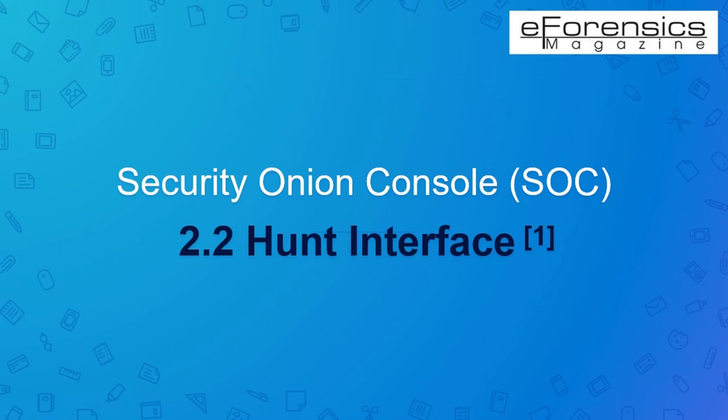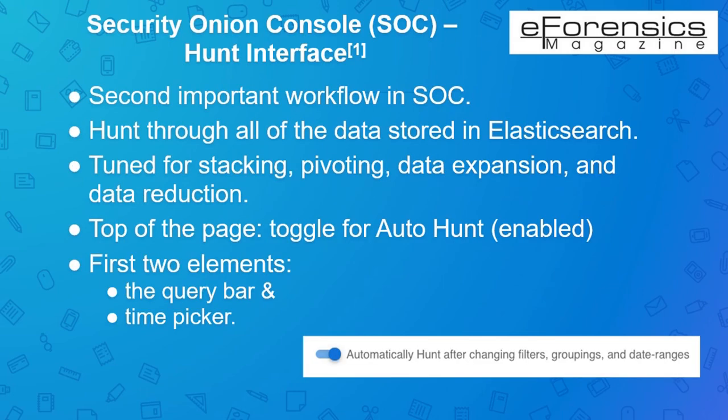The new Hunt interface is the next workflow option on the Security Onion Console. After logging in, you can click the hunt link below the alerts interface and then select one of the many predefined queries listed in the drop-down. The Hunt interface allows us to slice and dice our data, asking questions and looking for answers. Security Onion's Hunt interface allows you to hunt through all of the data collected by sensors and stored in Elasticsearch. The interface is extremely adjusted for pivoting, stacking, data reduction and data expansion.